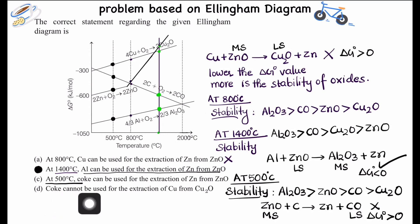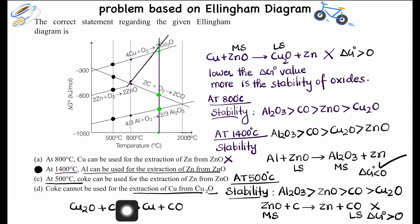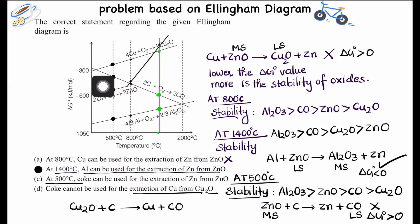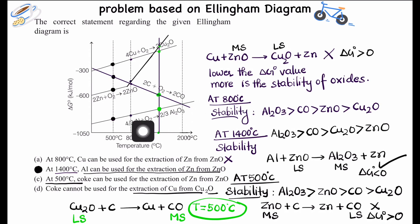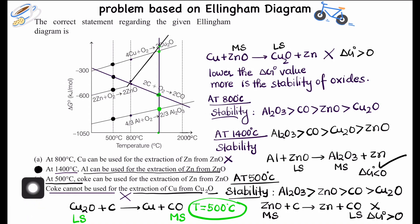The fourth option states that coke cannot be used for the extraction of copper from Cu₂O. The reaction is: Cu₂O + coke → Cu + CO. Looking at the diagram, CO is more stable than Cu₂O across a wide temperature range. At 500°C, CO is more stable and Cu₂O is less stable, so this reaction is feasible. The statement that coke cannot reduce Cu₂O is therefore wrong. The correct answer is option B.